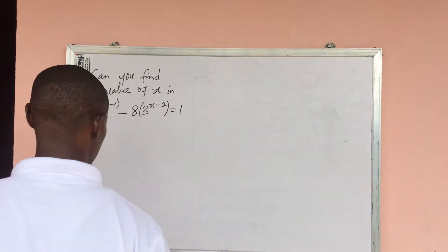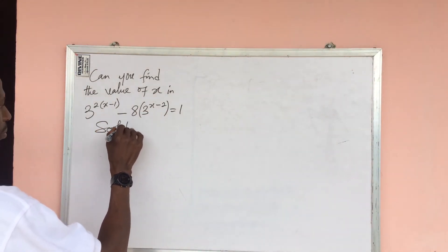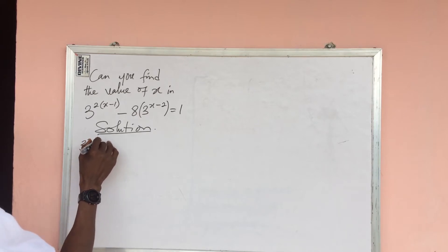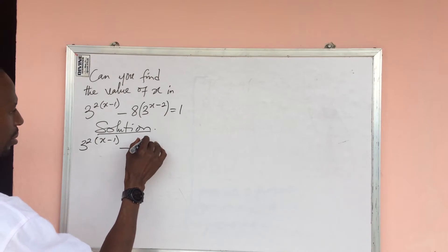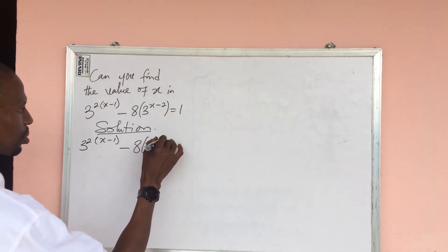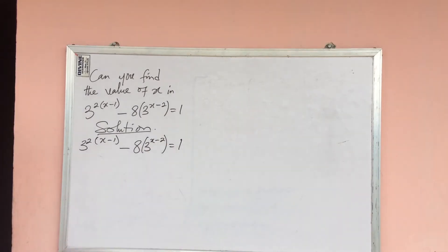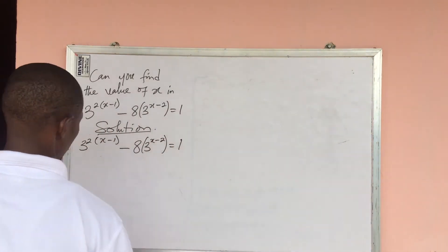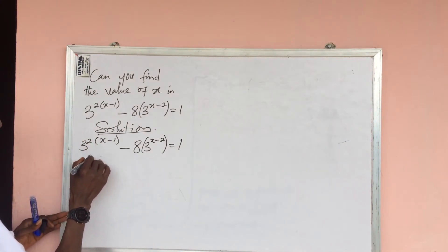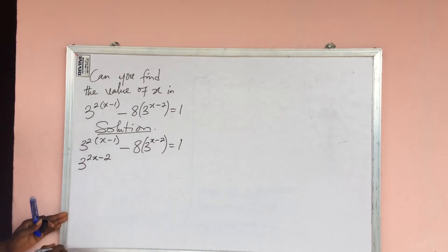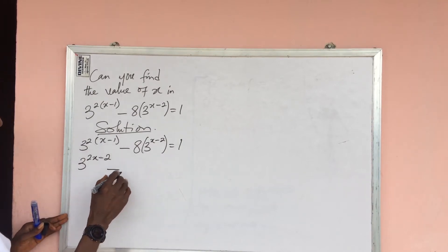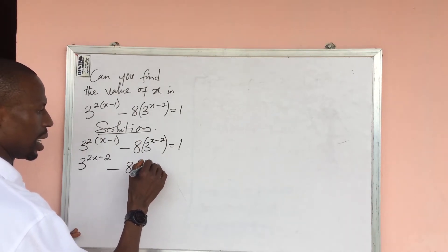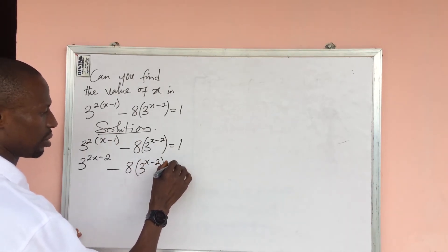Let's take our selection. Here we have the equation: 3 to the power of (2x − 1) minus 8 times 3 to the power of (3x − 2), all equal to 1. Looking closely, we can use the laws of indices to expand this, giving us 3 to the power of 2x minus 2, minus 8 to the power of (3x − 2), equal to 1.